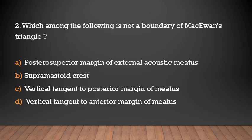Which among the following is not a boundary of Mackie-Mann's triangle? Options: posterior superior margin of external acoustic meatus, supramastoid crest, vertical tangent to posterior margin of meatus, vertical tangent to anterior margin of meatus.